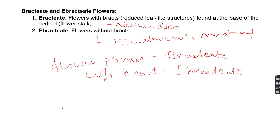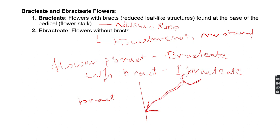Bracts are reduced leaf-like structures, also called rudimentary leaves, present at the base of the stalk of a flower. This type of structure is called a bract.